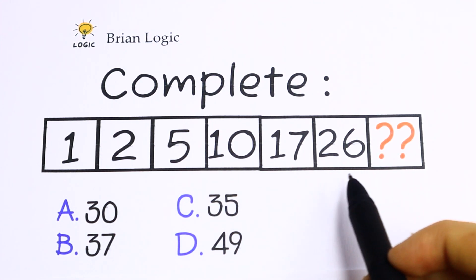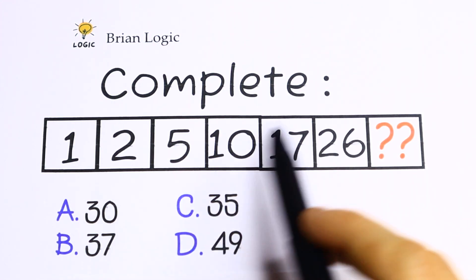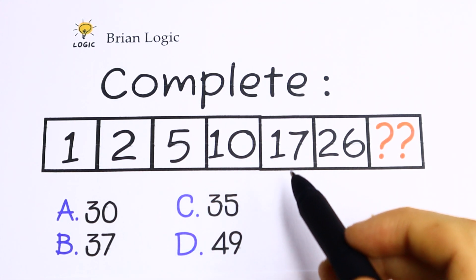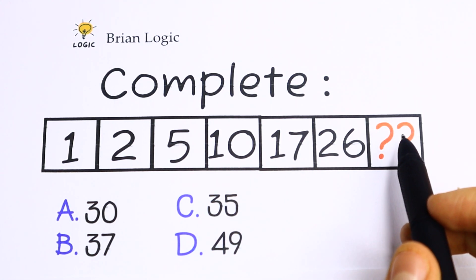So what will the following number be in this numeric series? What is the pattern between all of these numbers? We have 1, 2, 5, 10, 17, 26 and we need to find the last number.